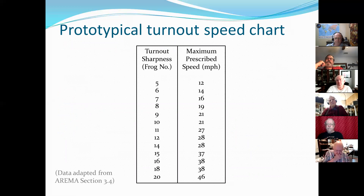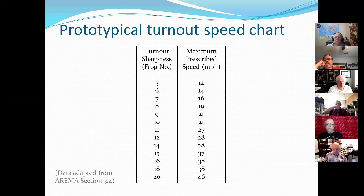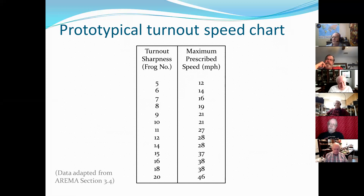Prototypical turnout speed chart: the left-hand column lists the frog number — five, six, seven, eight, all the way down to 20. That's the frog of the turnout. The right-hand column is the speed, 12 all the way down to 46. The lower the number on the frog, the slower you have to go through it — just like how sharp the curve is that you're trying to take your car around. The sharper the curve, the slower the speed. Laws of physics. I'm going to give you three seconds to look at this chart and memorize it — it will be on the test... just kidding.